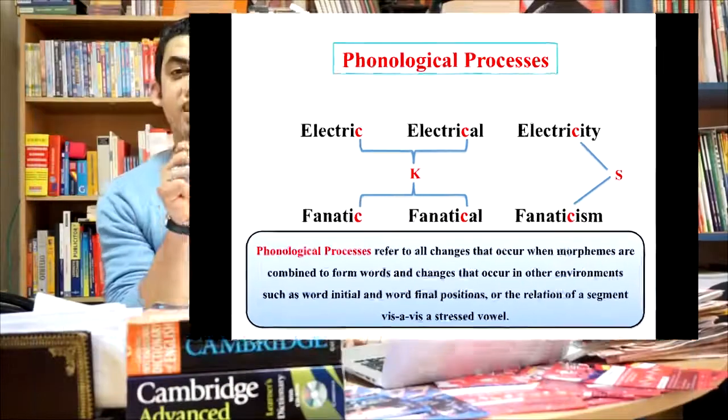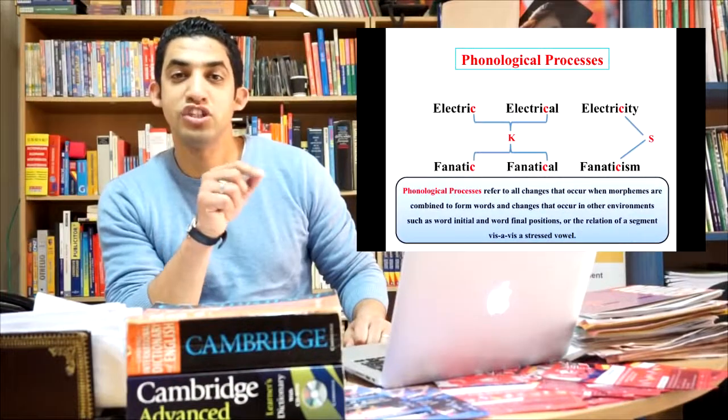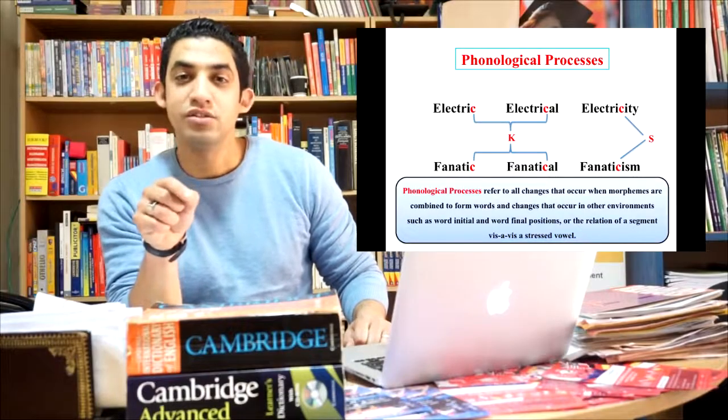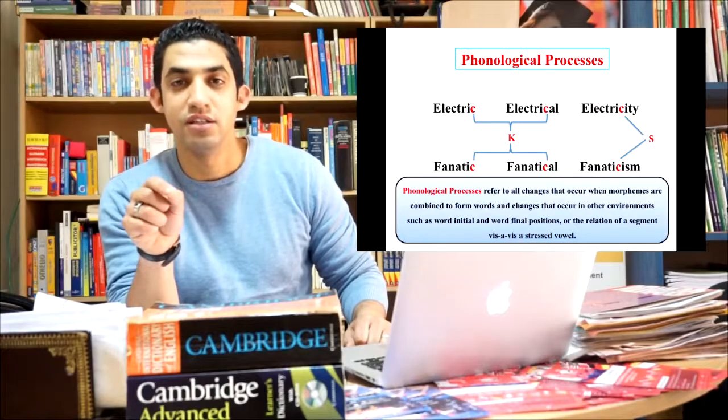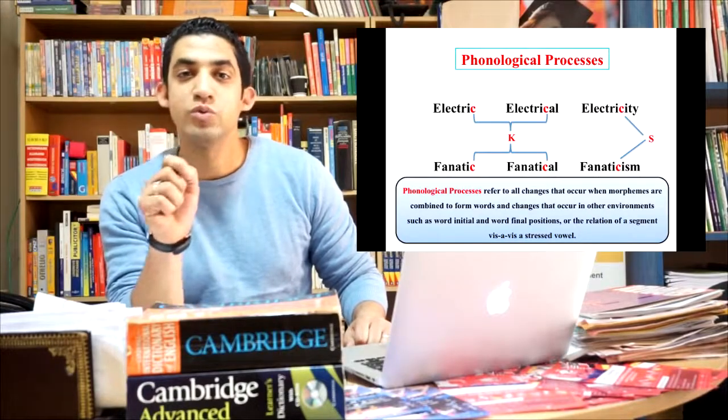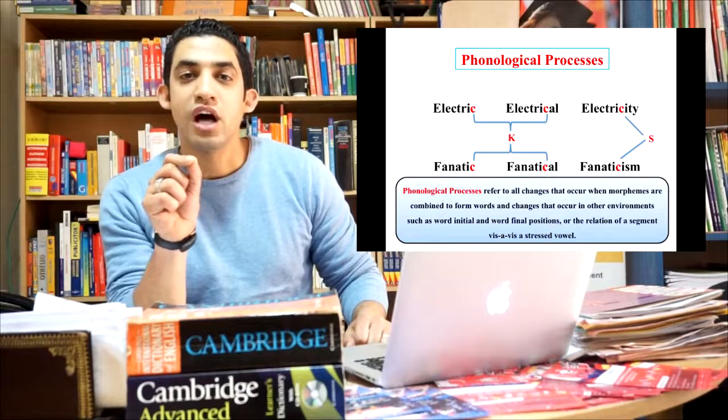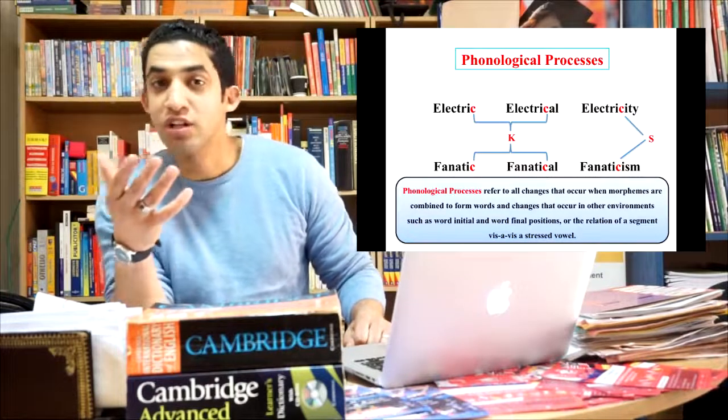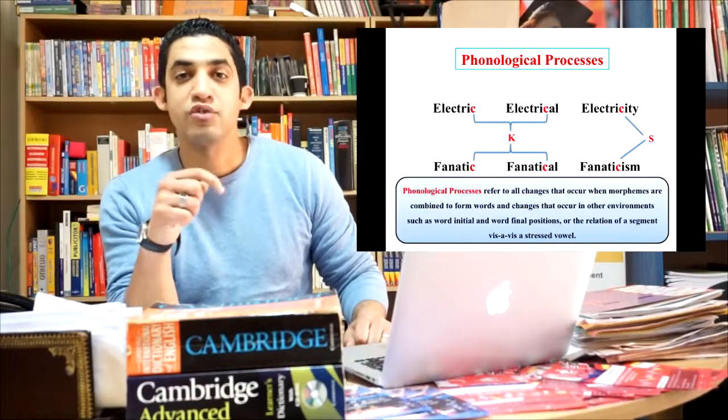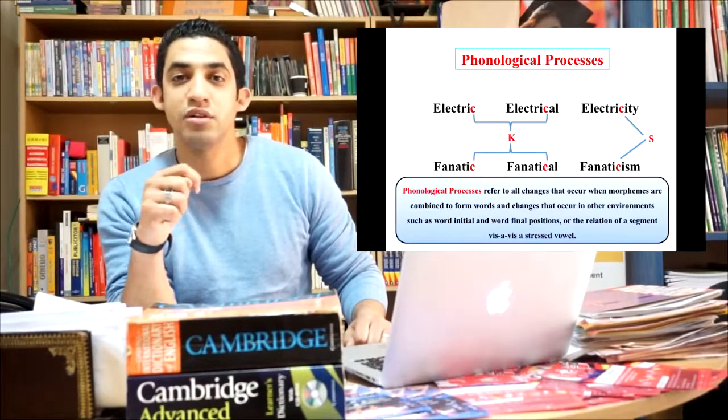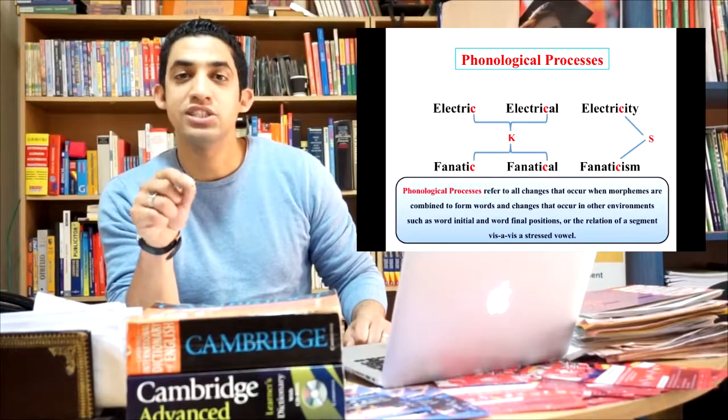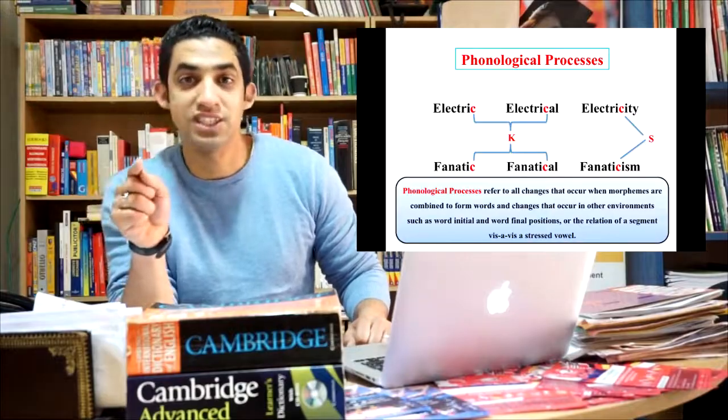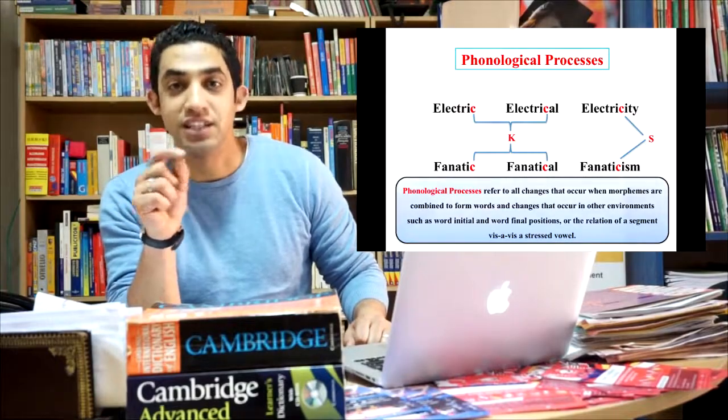Let's take this example. The sound K in electric changed to sound S in electricity because we added the nominalizer morpheme -ity. Electricity. But it didn't change when we added the adjectivizer morpheme -al. Electric, electrical, but electricity. Same case for the second example. The sound K in fanatic changes to the sound S in fanaticism, but it doesn't change when we change it to fanatical.